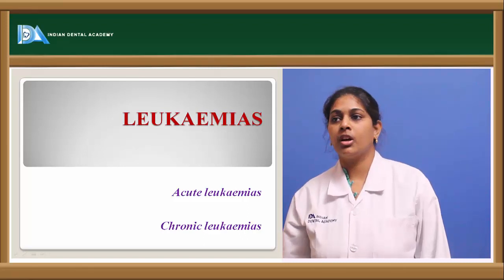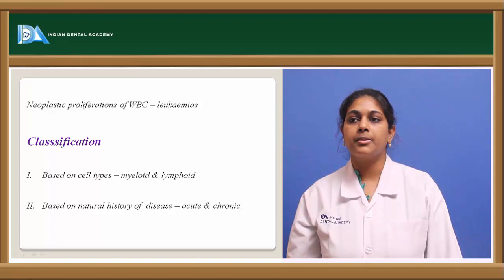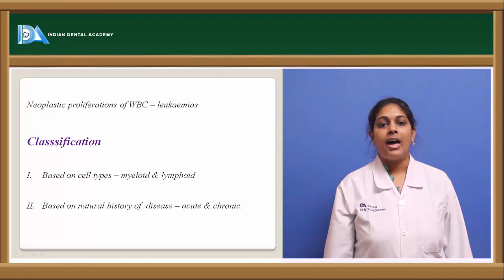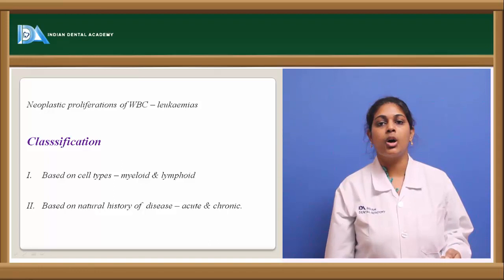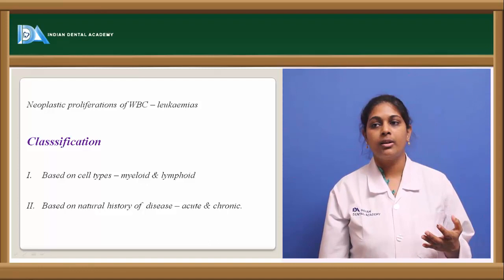Today we will be discussing leukemias. Leukemias are known as neoplastic proliferation of white blood cells. They are not exactly WBC cells but rather the precursors of WBC cells which are in immature form — they proliferate and result in the formation of leukemias. These leukemias have been classified historically based on the type of cell.